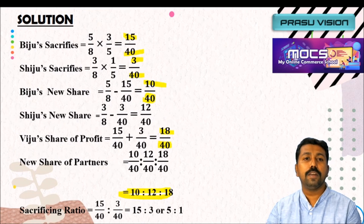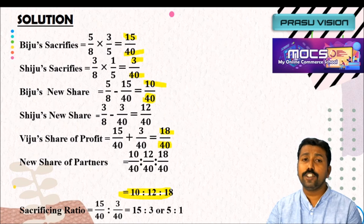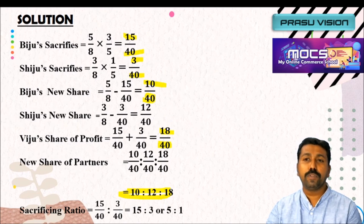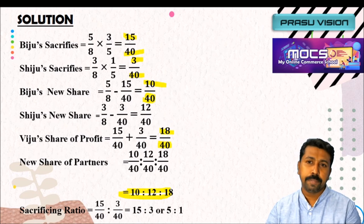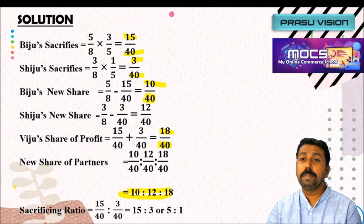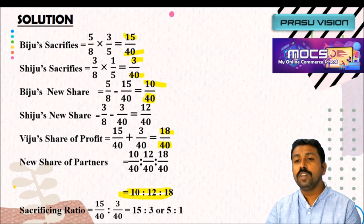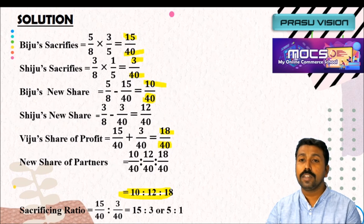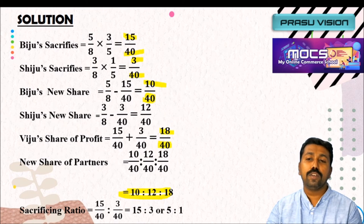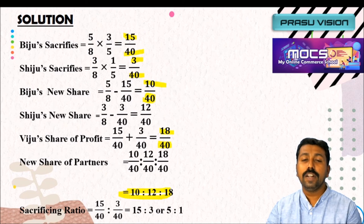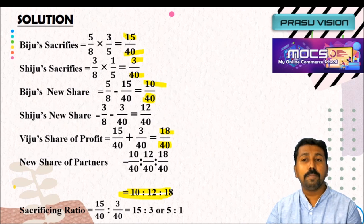These are the different problems related to the calculation of new profit sharing ratio and sacrificing ratio. It is very important — every year there will be questions for 3 to 4 marks on the calculation of ratios, especially new ratio and sacrificing ratio. Upcoming chapters will also include gaining ratio. Please practice these problems from textbooks and review this video again for a clear understanding. We will meet in the next video. Thank you.